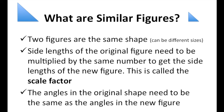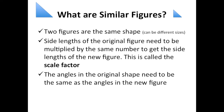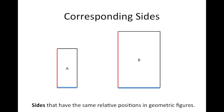The angles in the original shape need to be the same as the angles in the new figure. If you have the same angles, then you will have the same shape. These are called corresponding angles. We also have corresponding sides, which are the sides that have the same relative position in geometric figures.